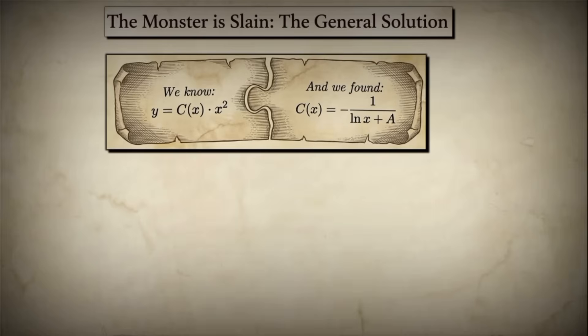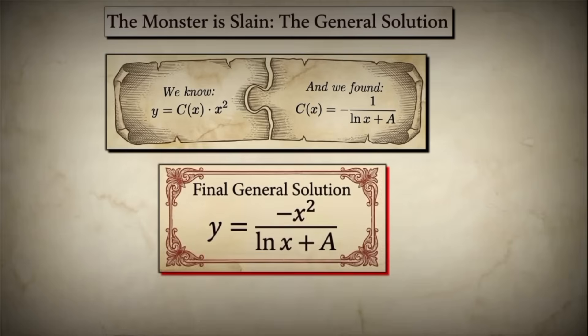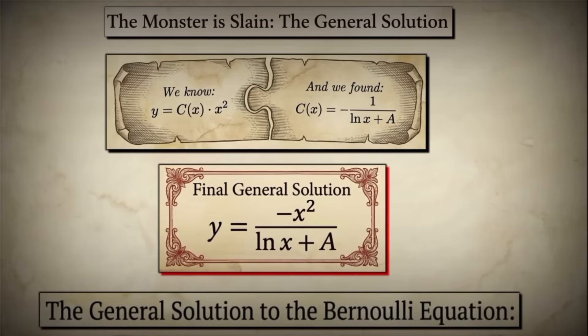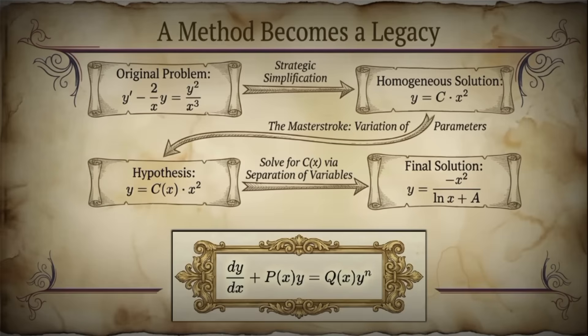The monster is slain — the Bernoulli equation is solved. With our function c(x) found, we substitute it back into y equals c(x)·x² to get the final solution: y equals (negative 1 over (ln x + a)) times x², which simplifies to y equals negative x² over (ln x + a). This is the general solution to Jacob Bernoulli's equation, where a is an arbitrary constant determined by initial conditions. Jacob Bernoulli's clever method of varying the parameter became a cornerstone technique in differential equations. This entire class of equations — equations that follow a similar non-linear form where powers of y appear non-linearly — now bears his name: Bernoulli differential equations.